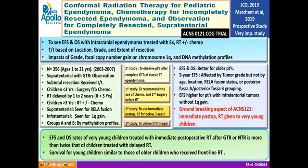ACNS0121 was a landmark trial of firsts: the first study to show that supratentorial grade 2 tumors with GTR1 can be observed; the first to establish that STR patients should receive chemotherapy before radiation; the first organized trial giving radiation to children under three; and importantly, it also defined the CTV margin for radiation planning.